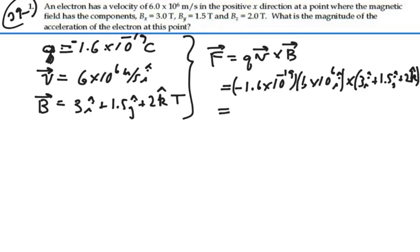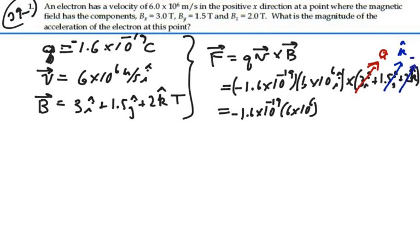This is equal to negative 1.6 times 10 to the minus 19, times 6 times 10 to the 6. An î crossed with an î is going to give us 0 — any vector crossed with itself will be 0. An î crossed with ĵ will give us k̂. An î crossed with k̂ will give us negative ĵ. So we have î cross 3î which gives 0, î cross 1.5ĵ gives 1.5k̂, and î cross 2k̂ gives negative 2ĵ.